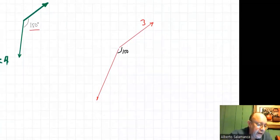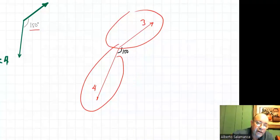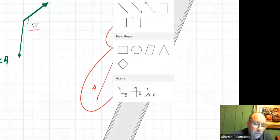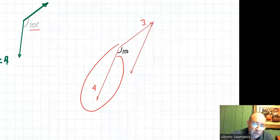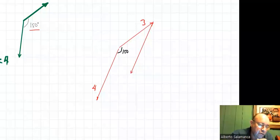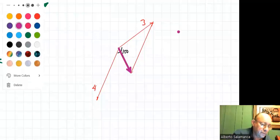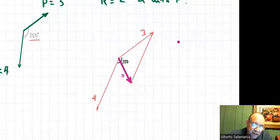Now do your triangle or your parallelogram — let's do the triangle. In the triangle method, you draw one force and then the other next to it. So it will be another force parallel to that one with a length of four units. The resultant is the force that goes from the tail of the first force to the head of the last force. So that one right here will be your resultant — this is the three, this is four.